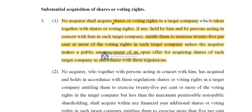So let's read it again: no acquirer shall acquire shares or voting rights in the target company, which taken together with shares or voting rights, if any, held by him and by persons acting in concert with him in such target company, entitle them to exercise 25% or more of the voting rights in such target company, unless the acquirer makes a public announcement of an open offer. Be very careful — what are you acquiring? Shares or voting rights. And what is happening? As acquirer along with PAC, you get entitlement to 25% or more of the voting rights. If these two things are happening, before you acquire these shares or voting rights, you will have to give a public announcement for the open offer.